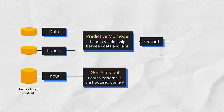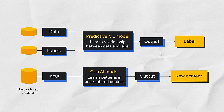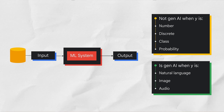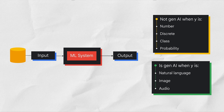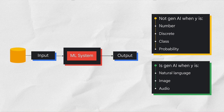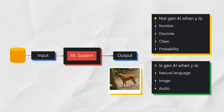One more quick example. The top image shows a traditional machine learning model which attempts to learn the relationship between the data and the label, or what you want to predict. The bottom image shows a generative AI model which attempts to learn patterns on content so that it can generate new content. So, what if someone challenges you to a game of 'is it Gen AI or not?' It is not Gen AI when the output Y or label is a number or a class — for example, spam or not spam — or a probability. It is Gen AI when the output is natural language like speech or text, audio, or an image, for example.